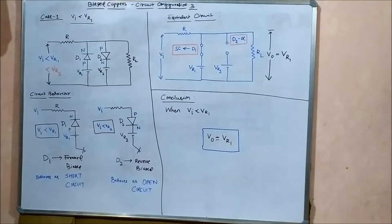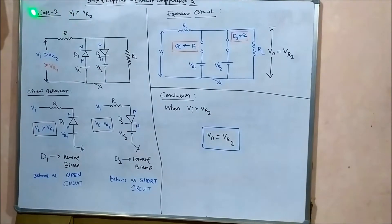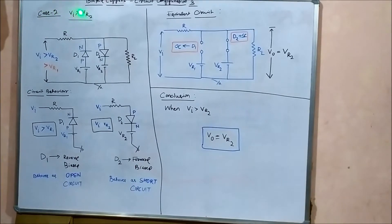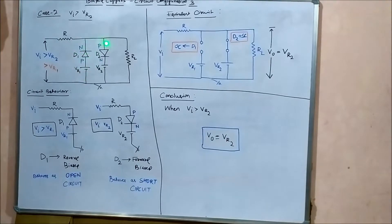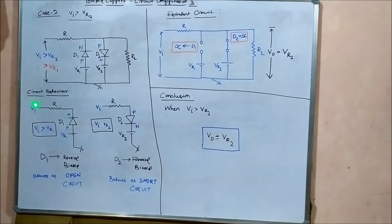Now case two: when Vi is greater than Vr2. When the input voltage is greater than reference voltage Vr2, it also implies it is greater than Vr1, since Vr1 is lesser than Vr2. Again, we will study the behavior of diodes D1 and D2 separately, as they govern the behavior of the circuit and the output voltage across load resistance RL.